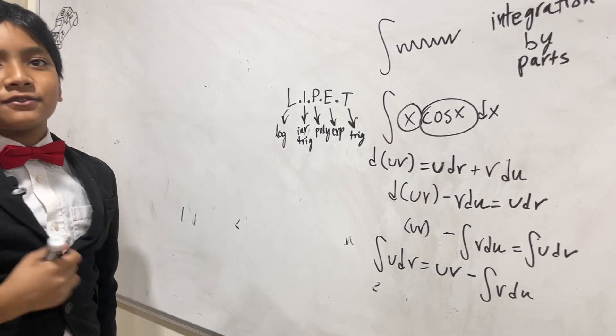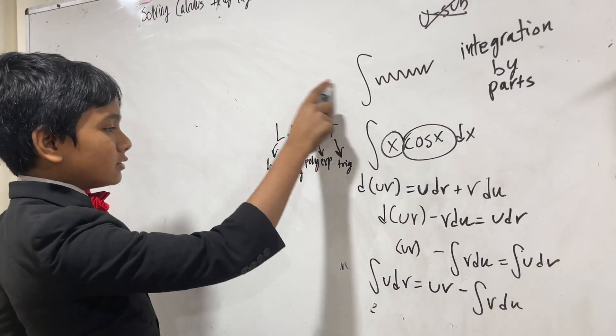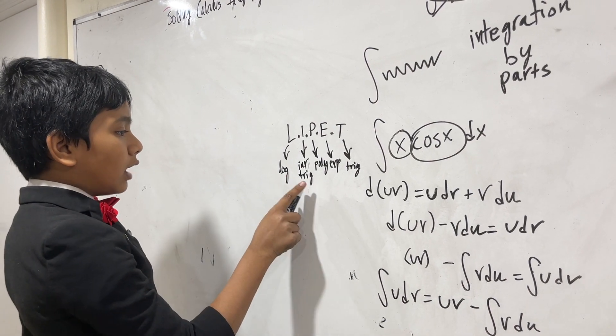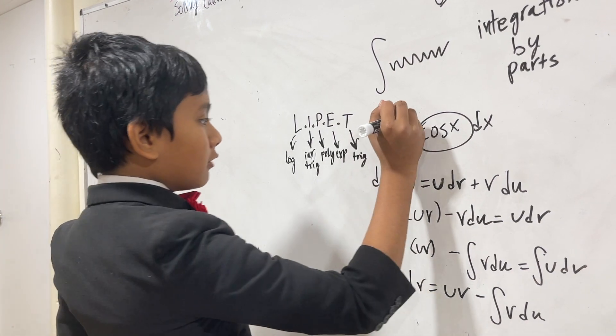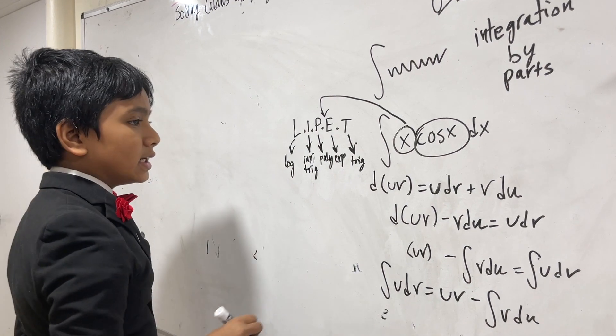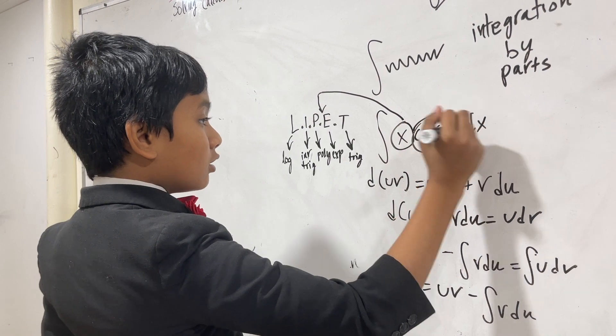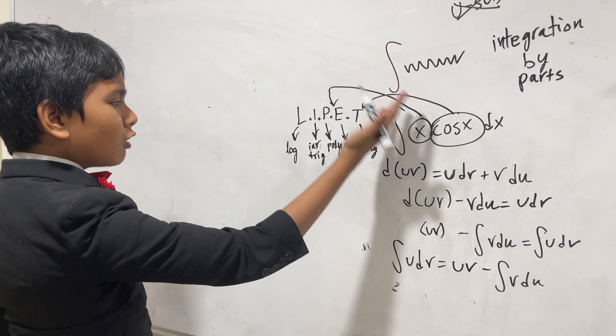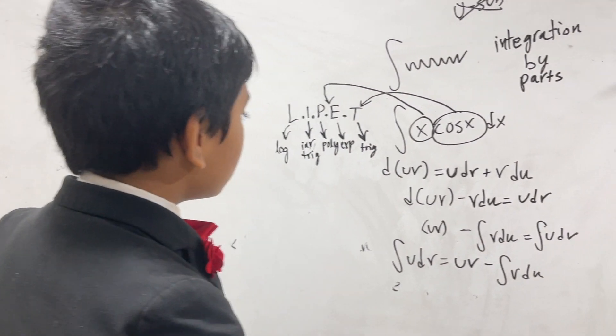It's like the advanced version of PEMDAS. This tells you which function you should make u. The higher up something is in this acronym, then you should make it u. Now x can be viewed as an exponential function because it's x to the first power, and cosine x is obviously a trig function.